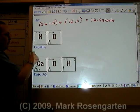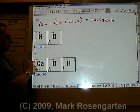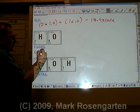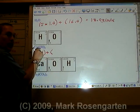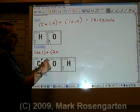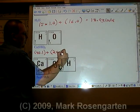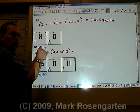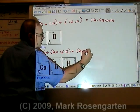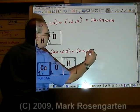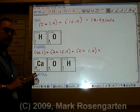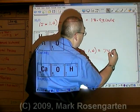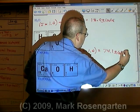For calcium hydroxide, there is one calcium with a mass of 40.1, plus two oxygens each at 16.0, and two hydrogens each at 1.0, for a total formula mass of 74.1 grams per mole.